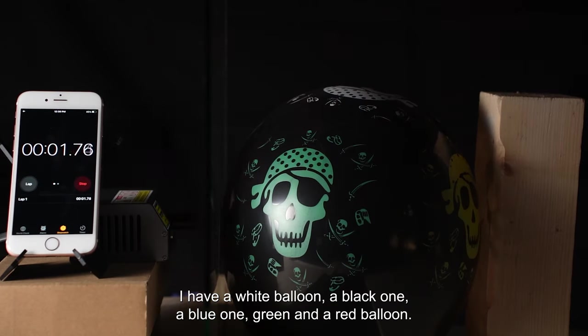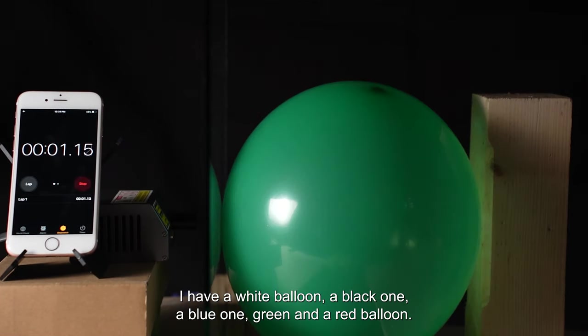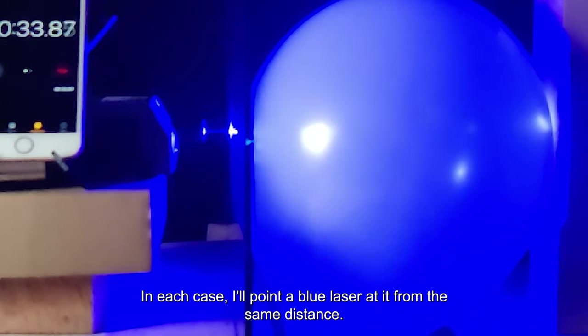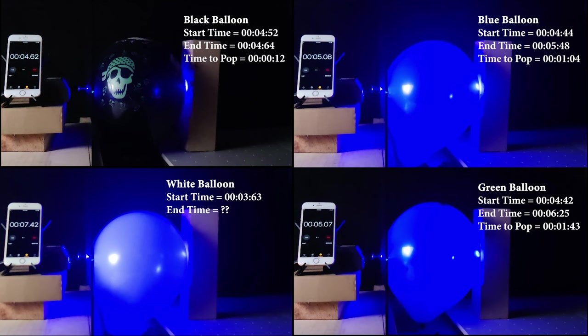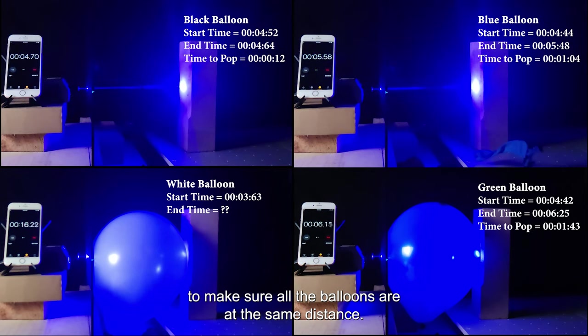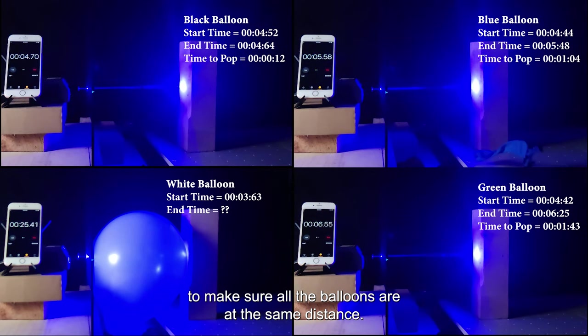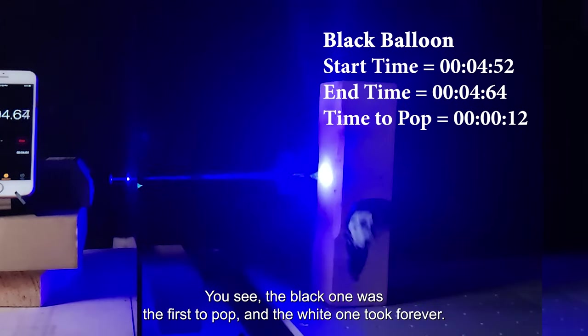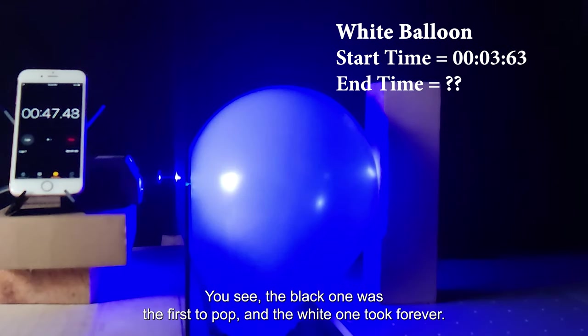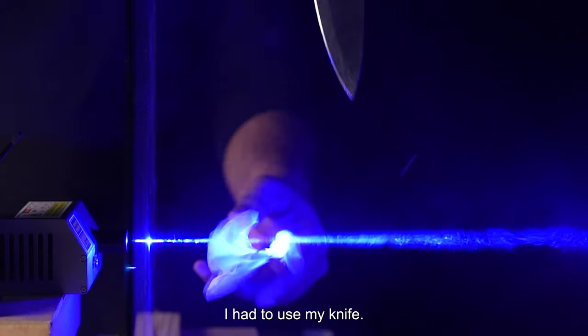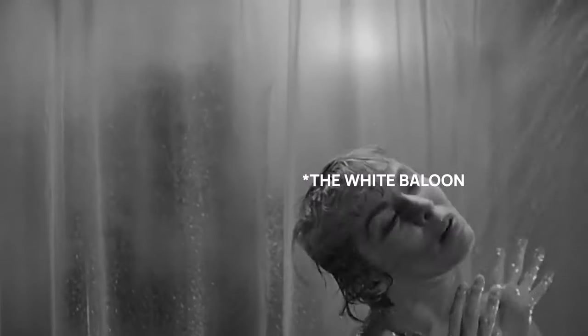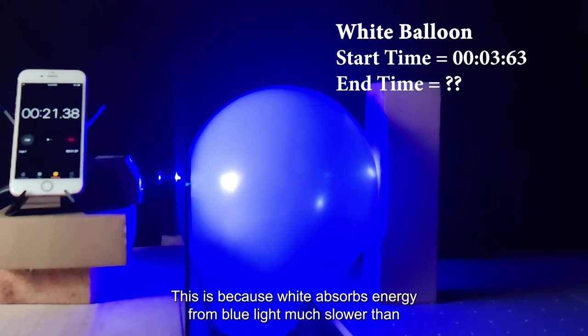Let me show this with an example. I have a white balloon, a black one, a blue one, green, and a red balloon. In each case, I'll point a blue laser at it from the same distance. Let's see what happens. I'm using a piece of glass to make sure all the balloons are at the same distance. You see the black one was the first to pop, and the white one took forever - I had to use my knife. This is because white absorbs energy from blue light much lower than the other colors.